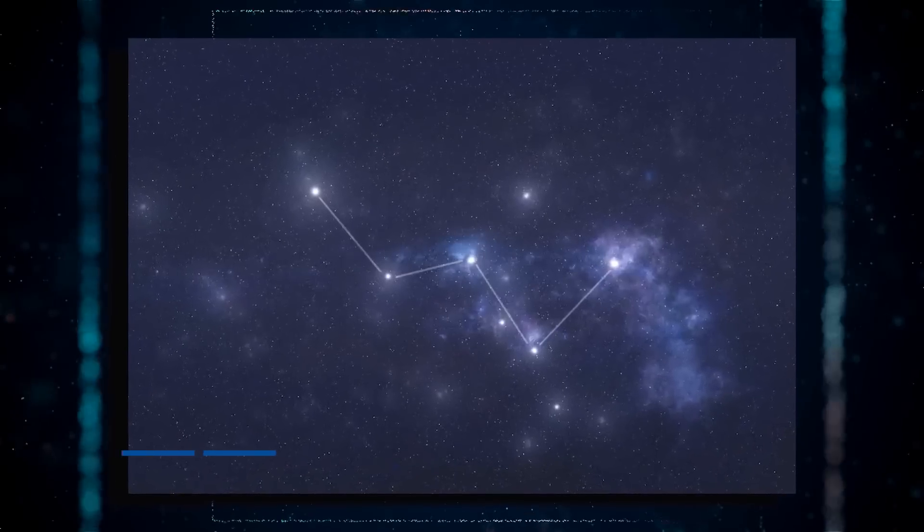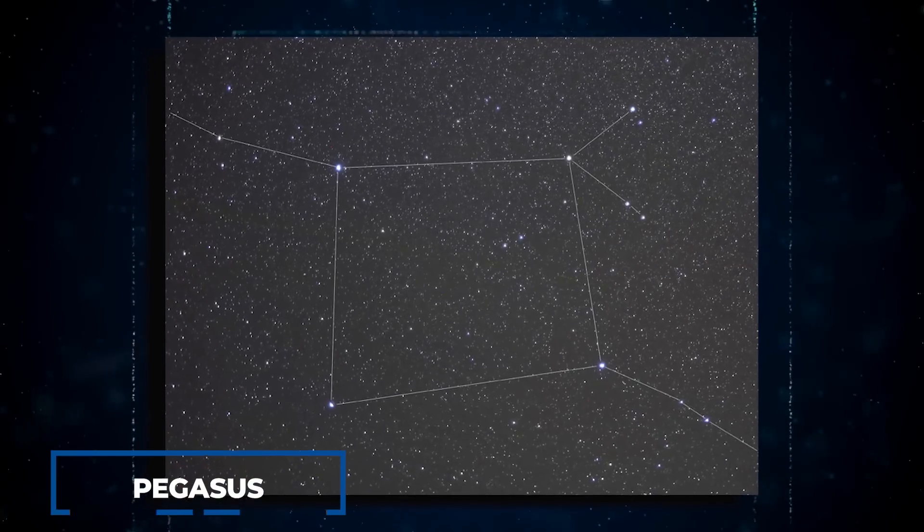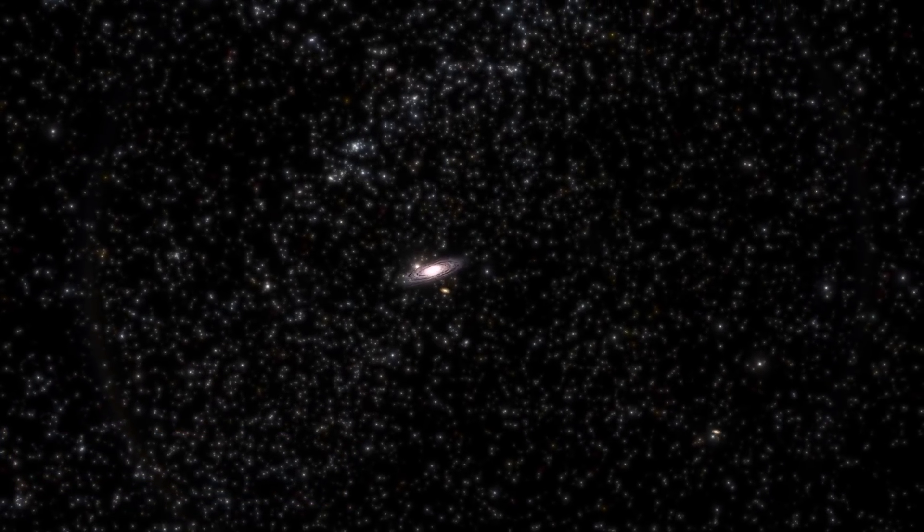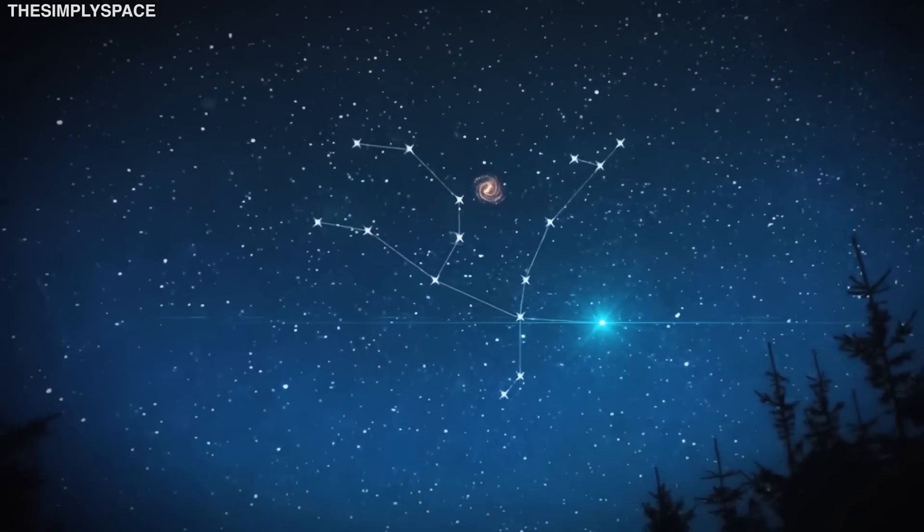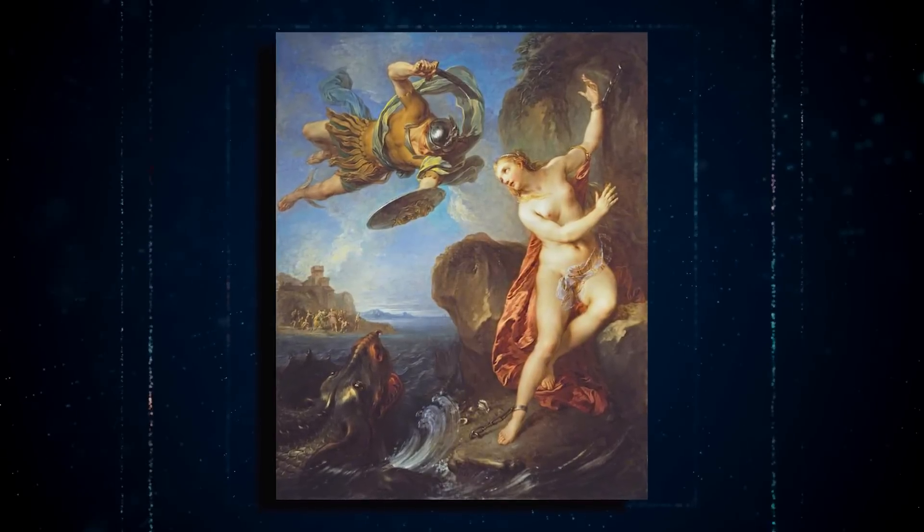If you look up into the northern night sky between Cassiopeia's W asterism and the Great Square of Pegasus, you will find the constellation Andromeda. The star pattern was dubbed after the Greek hero Perseus' wife, the fabled Princess Andromeda.